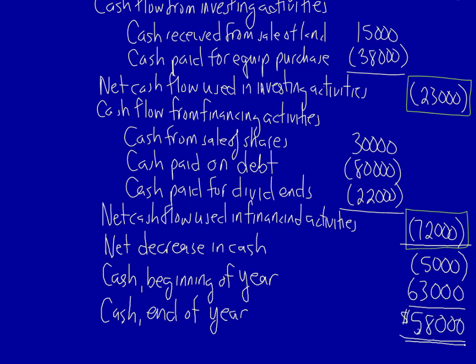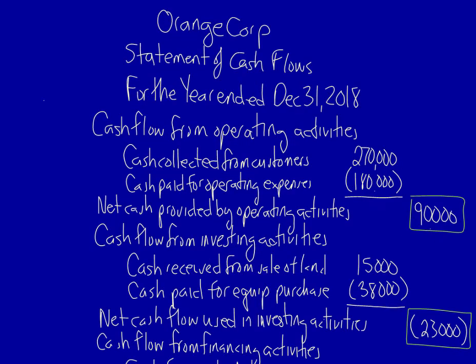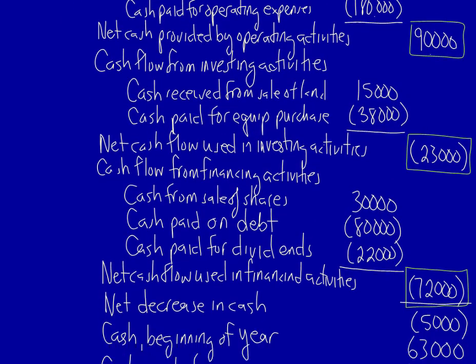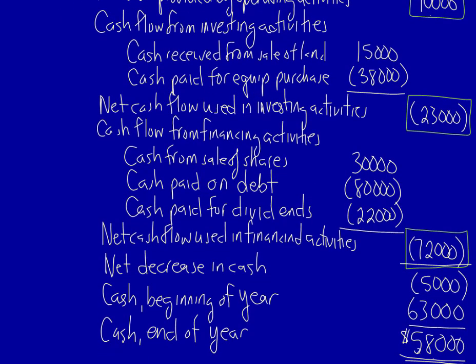That's it for the statement of cash flows. Remember to start with the appropriate heading in that order. Then always start with the cash flows from operating activities — operating activities are the only sustainable source of cash. Move on to cash flow from investing activities, and then finally cash flow from financing activities.